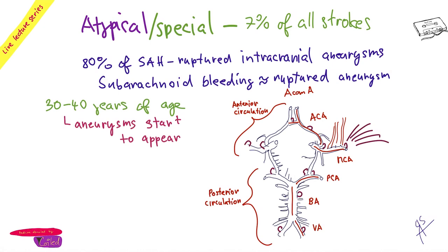Sooner or later one may rupture. Those who don't immediately fall into coma describe it as the worst headache of their life — a severe, never-before-experienced headache. We call it a 'bomb in the brain.' Some patients present with only this headache and are neurologically intact, while others are in a coma immediately.